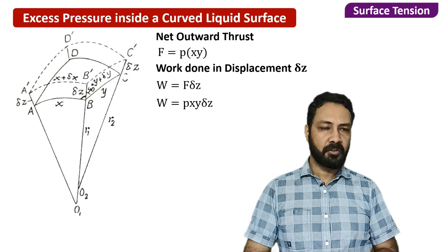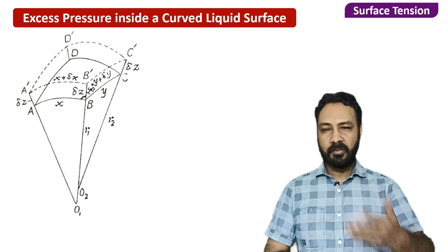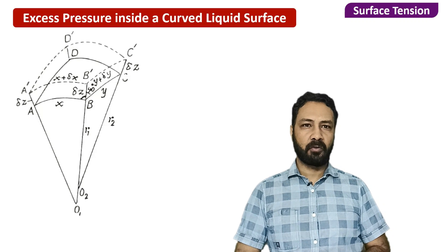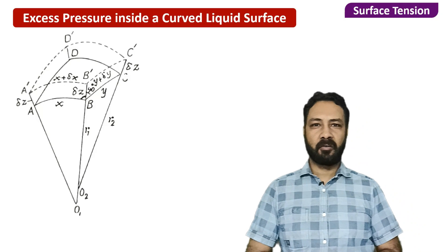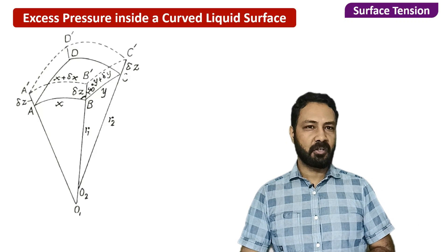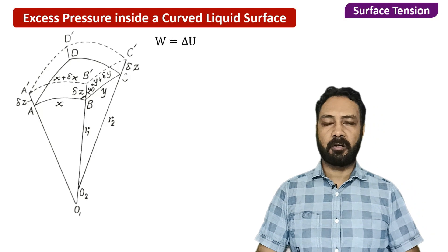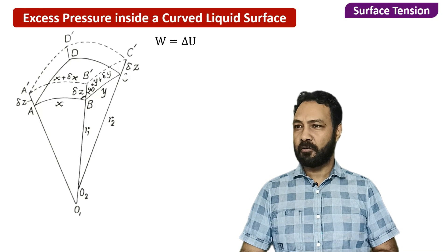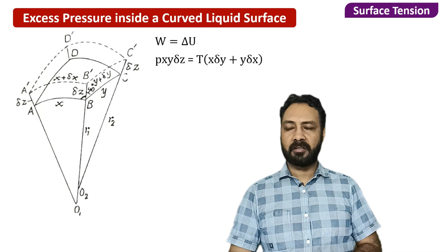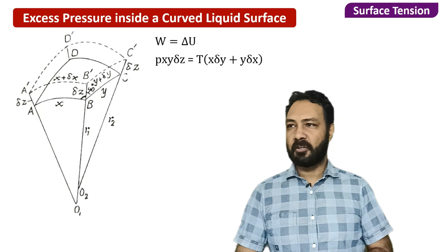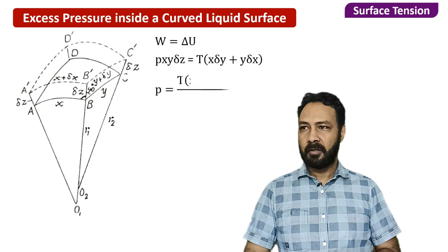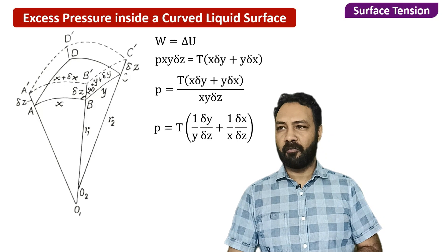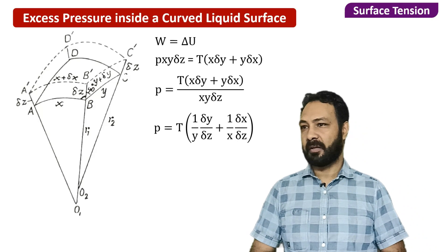Using energy conservation, since everything is done very slowly, the work done by the external agent W equals the change in surface energy ΔU. So W = P·XY·ΔZ and ΔU = T(X·ΔY + Y·ΔX). Dividing both sides by XY·ΔZ, and simplifying, we get: P = T[(1/Y)(ΔY/ΔZ) + (1/X)(ΔX/ΔZ)].